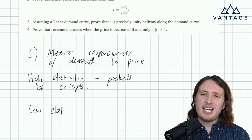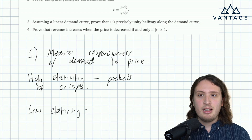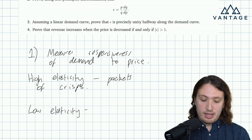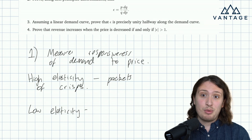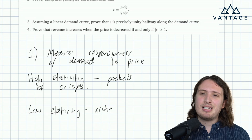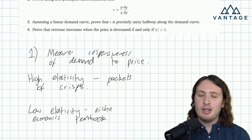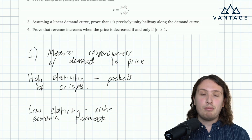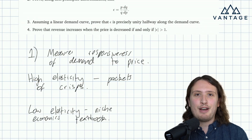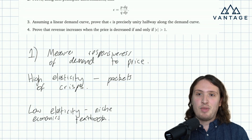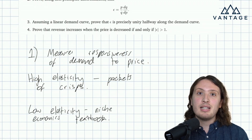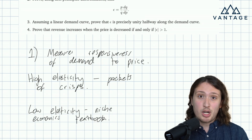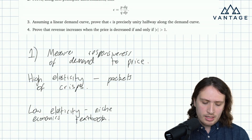Low elasticity suggests consumers don't really have the freedom to reduce their consumption or switch to a competitor — they're basically forced to pay whatever's demanded. A good example would be a very niche economics textbook. It might be that the main market is undergraduate students who have it on a mandatory reading list. They can't opt for a different competitor, they've got to have that specific book, so they're forced to pay whatever's demanded. Even if there's quite a big percentage change in price, it won't impact quantity much — they have no freedom.